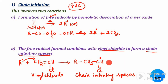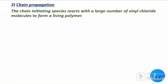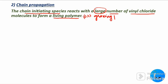Now let us see the next step: chain propagation. The chain initiating species formed in the first step now reacts with a large number of vinyl chloride molecules to form a living polymer, otherwise called a growing polymer.